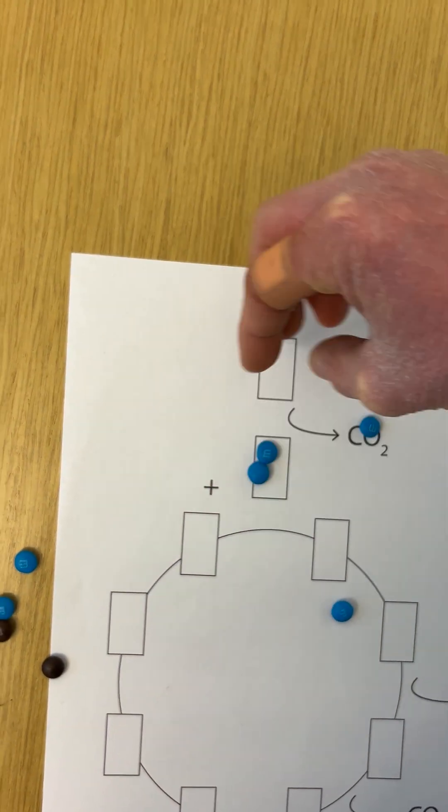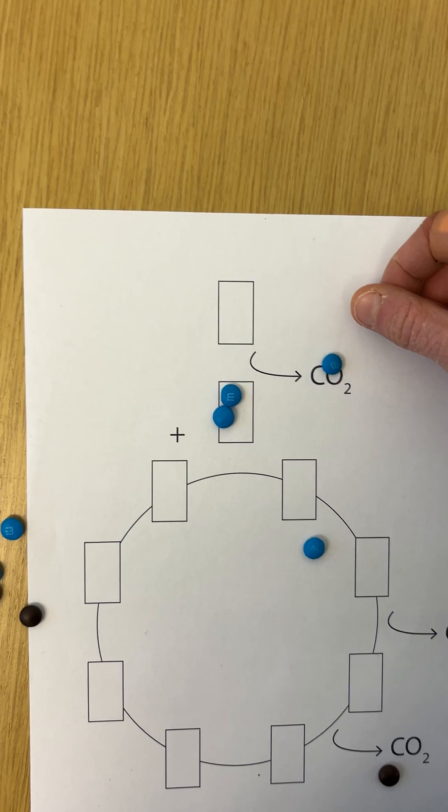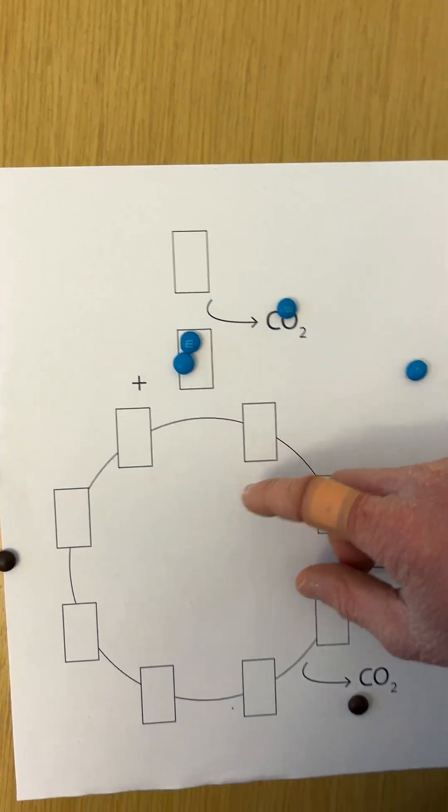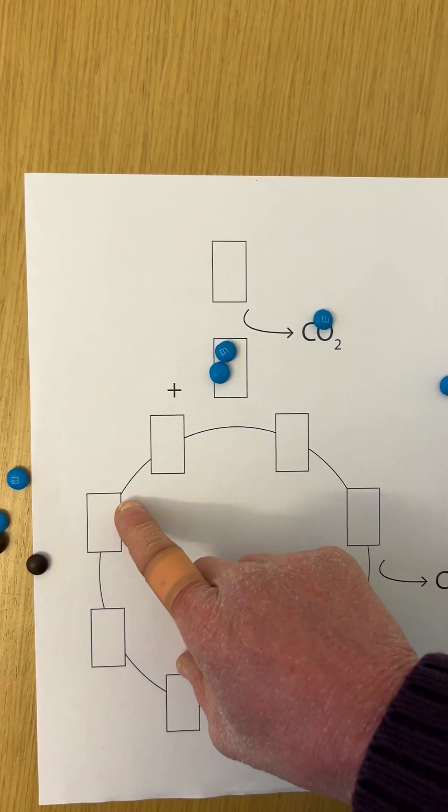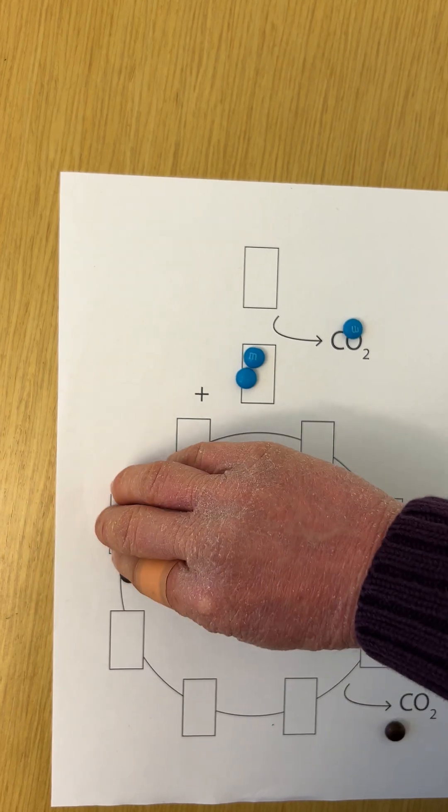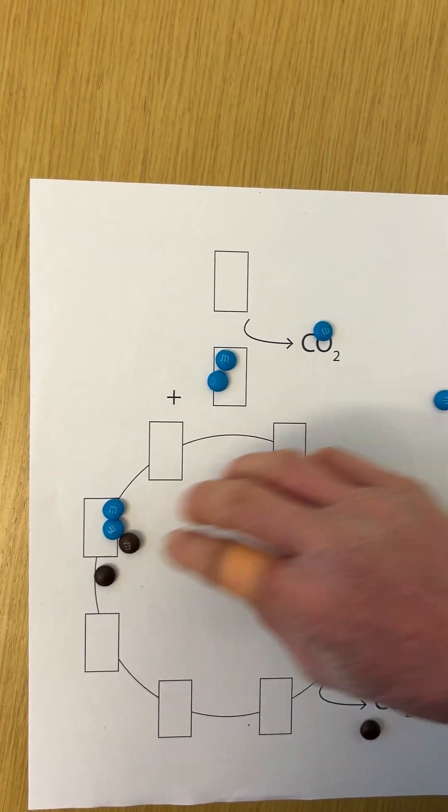But now if we want to bring in this acetyl-CoA, we can't. This is the idea behind anaplerotic reactions, which are reactions that add in pathway intermediates so that you're able to keep the cycle going.